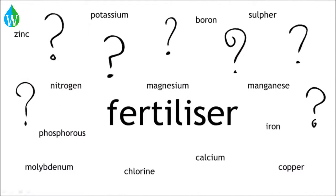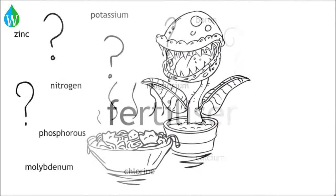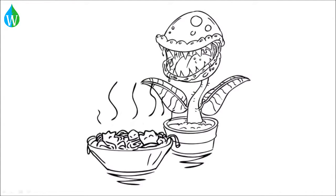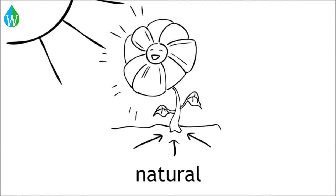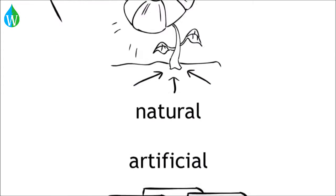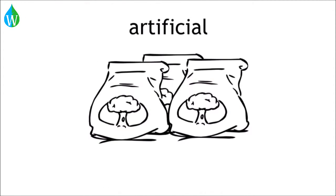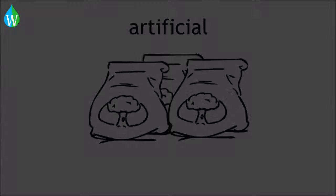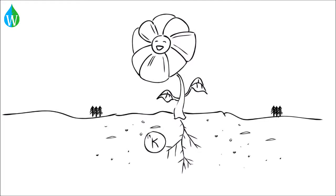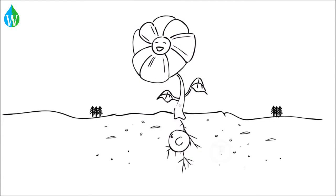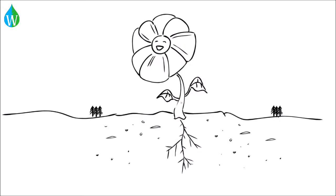Put simply, fertilizer is plant food. It can be natural or deliberately put into soil by people. Fertilizer contains different kinds of nutrients that are essential for plants to grow.